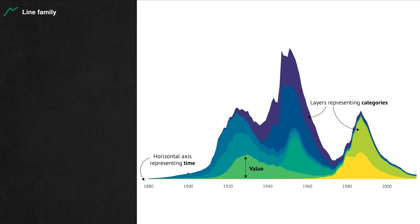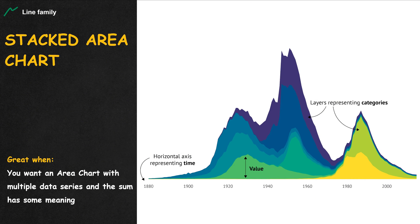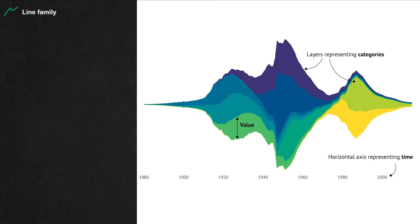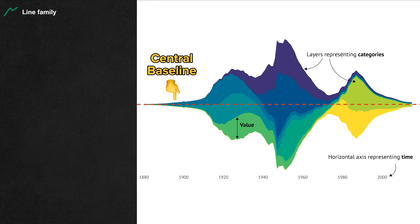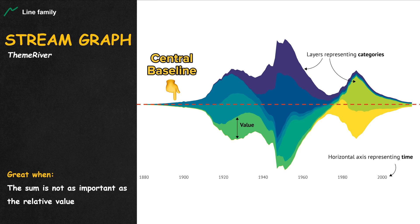When two or more area charts are stacked on top of each other, we have the stacked area chart. When these stacked area charts revolve around a central baseline value rather than getting stacked on the x-axis, we have the stream graph. In these graphs, the outer boundaries create a symmetrical shape.